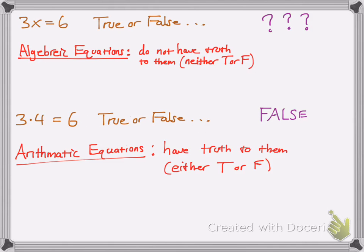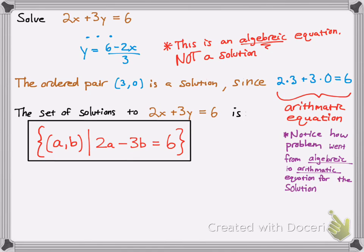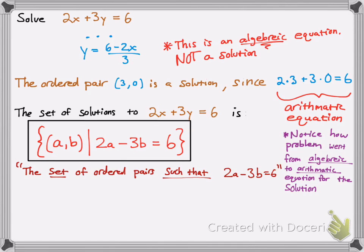Now let's actually solve this example — let's find all the solutions to 2x plus 3y equals 6. You might be confused: do I just write the equation again with a different ordered pair? Well, using set notation, you read it as: the set of ordered pairs (a, b) such that 2a plus 3b equals 6. That describes all solutions to that one linear algebraic equation.